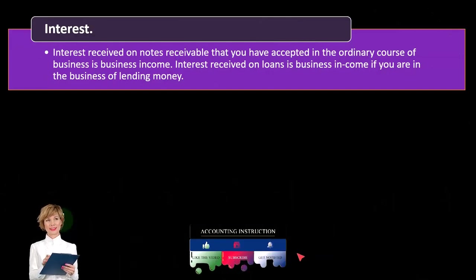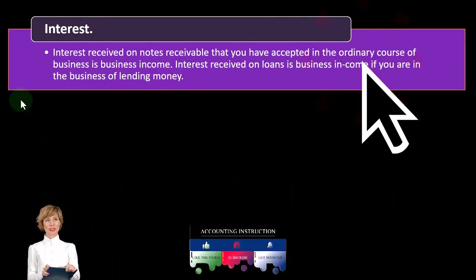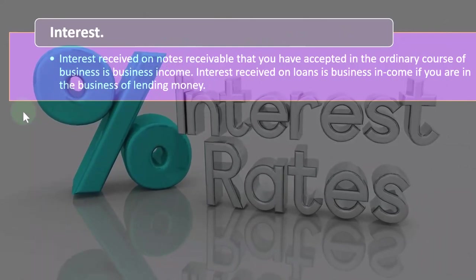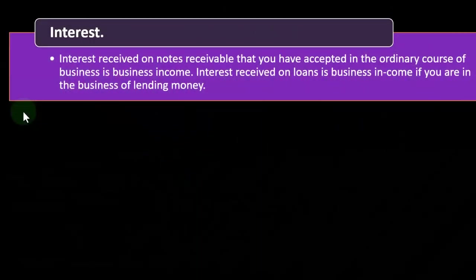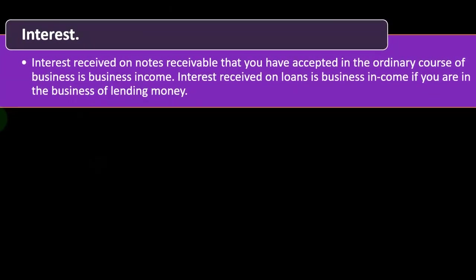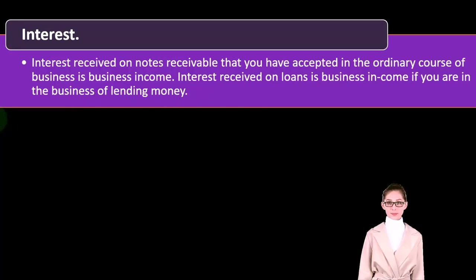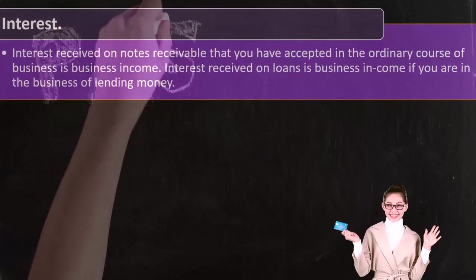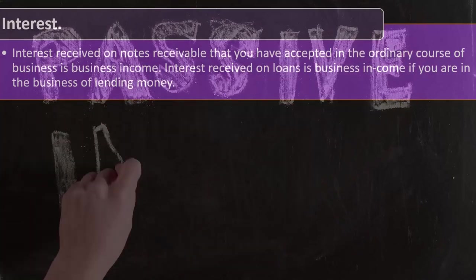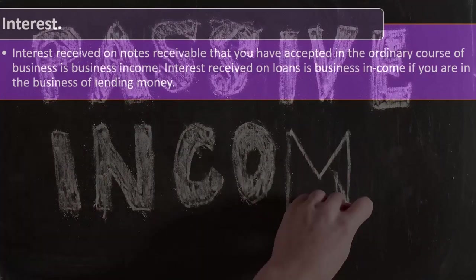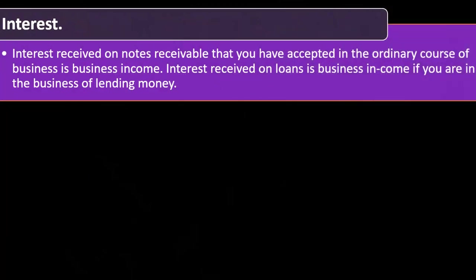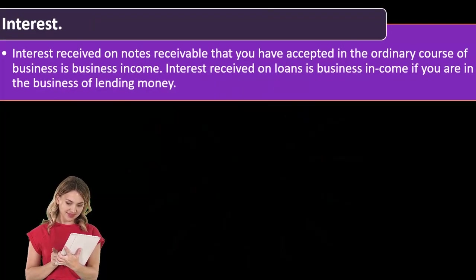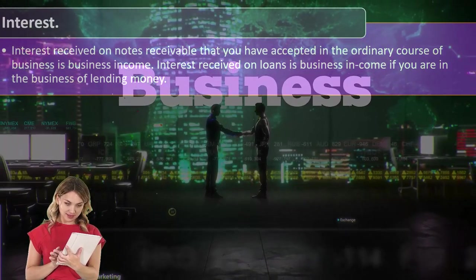Now we're moving on to interest. Interest received on notes receivable that you have accepted in the ordinary course of business is business income. Notice that interest — and like dividends, for example — can get a little confusing, because sometimes we think of interest as passive income, something we get when we have money in the bank. However, it depends on the industry you are in when determining what kind of income it is and where to report it.